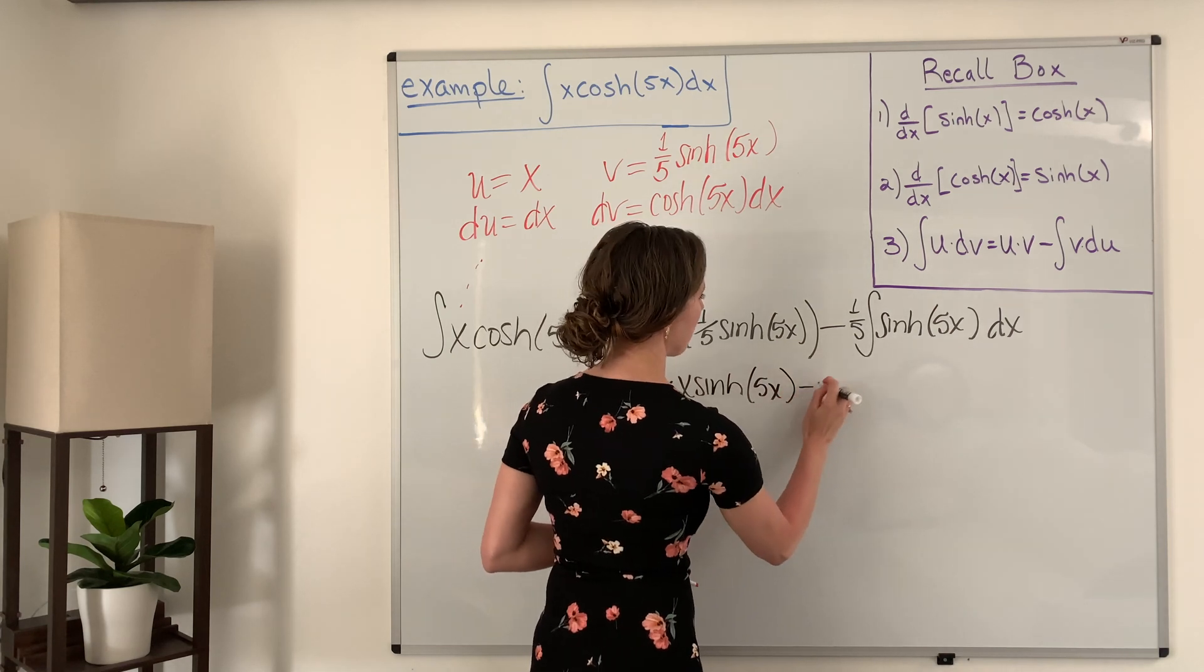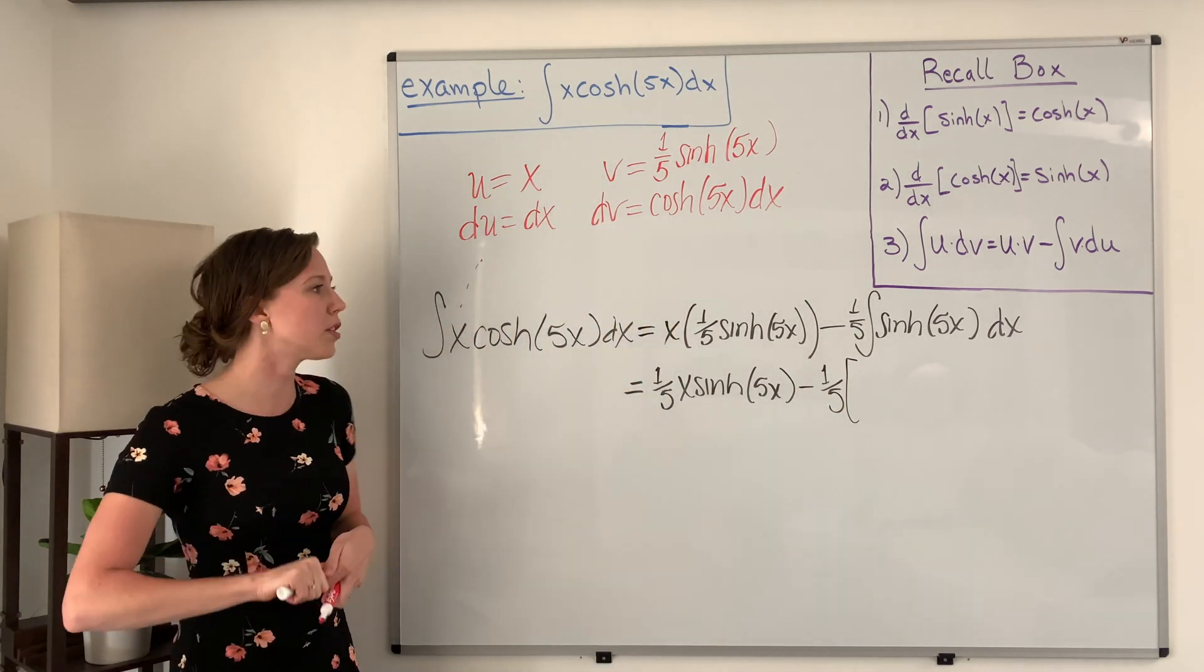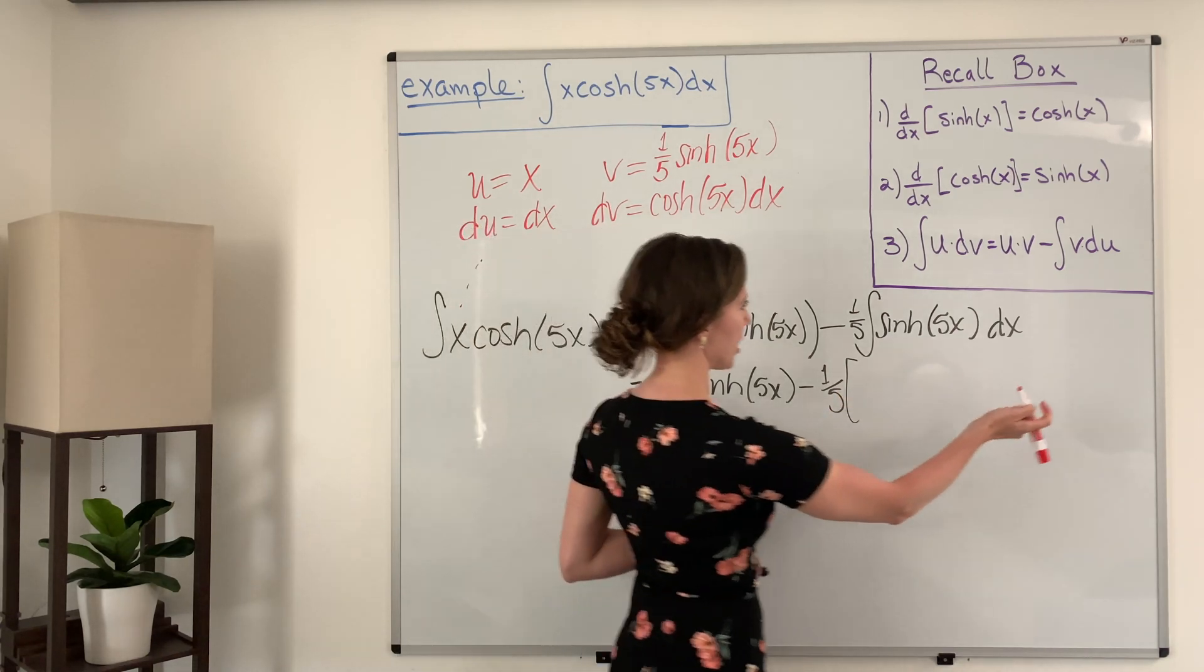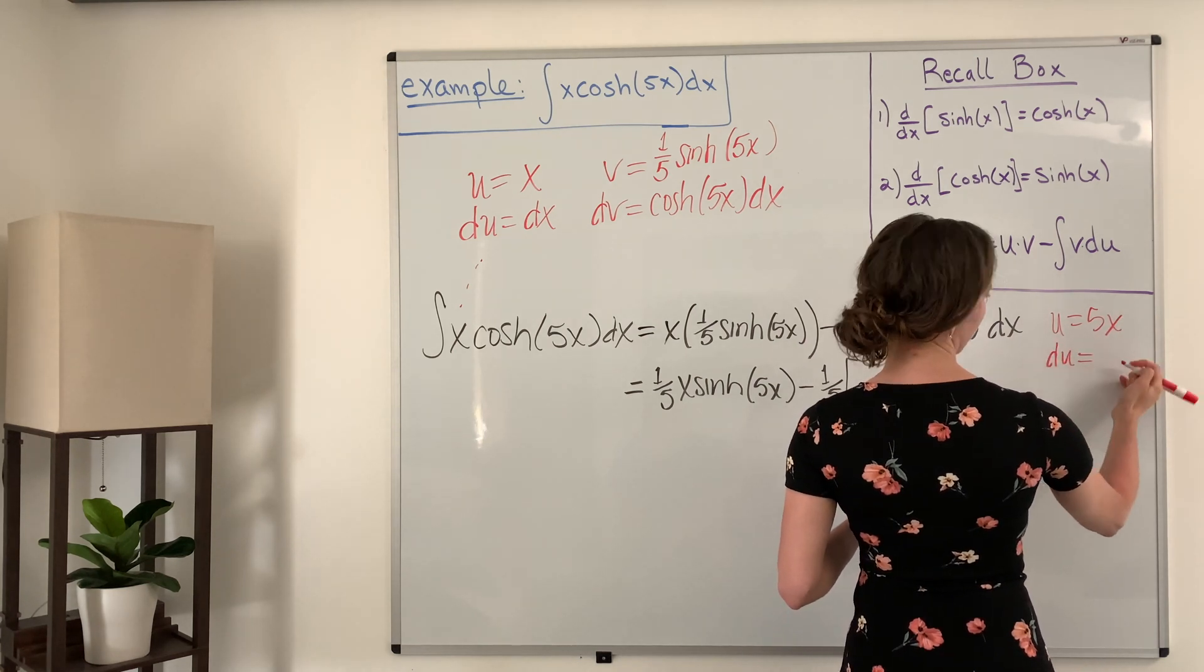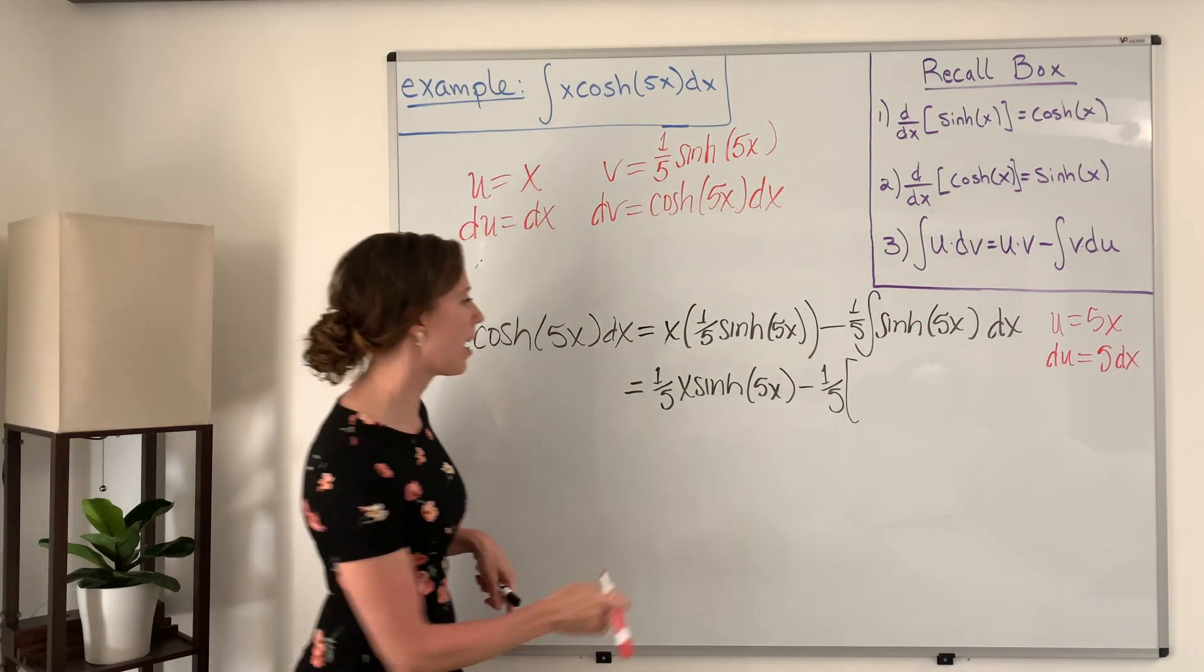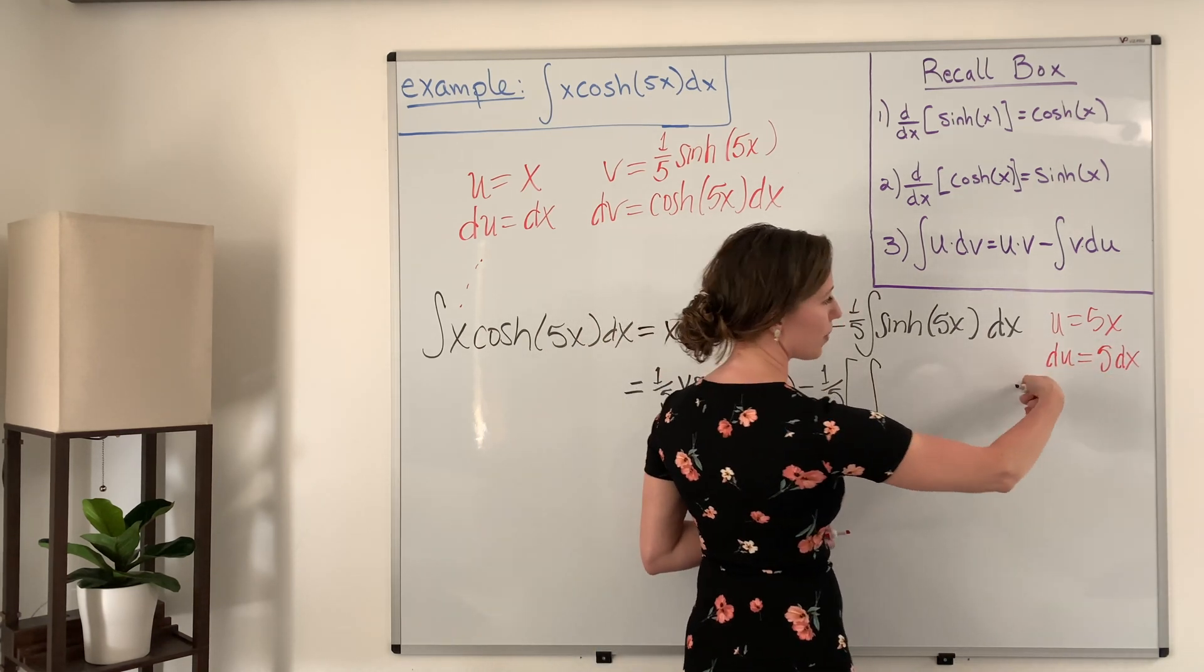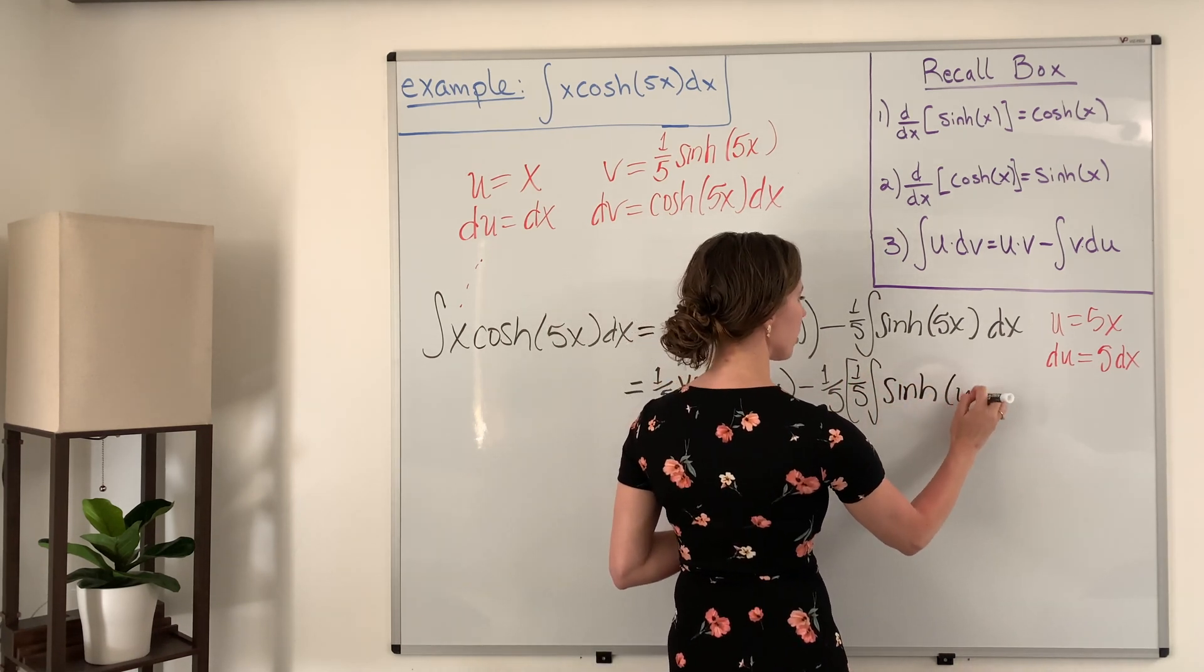And again we have to use u-substitution in order to solve this, and so I will work that out for this particular one. And so over here if we pick for u, we pick 5x, then du is 5 dx. And so then we have one-fifth times the integral of, and then this is going to, if we divide both sides by five, we get one-fifth out in front here, hyperbolic sine of u du.